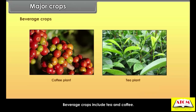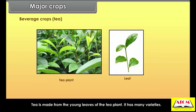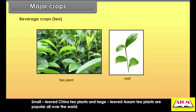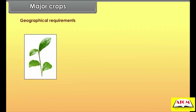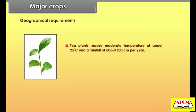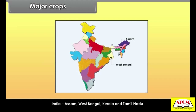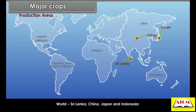Beverage crops include tea and coffee. Tea is made from the young leaves of the tea plant and has many varieties — small-leaved China tea plants and large-leaved tea plants are popular all over the world. Geographical requirements: tea plants require moderate temperature of about 25 degrees Celsius and a rainfall of about 200 centimeters per year. Well-drained hilly slopes grow most of the tea. Production areas — India: Assam, West Bengal, Kerala and Tamil Nadu. World: Sri Lanka, China, Japan and Indonesia.